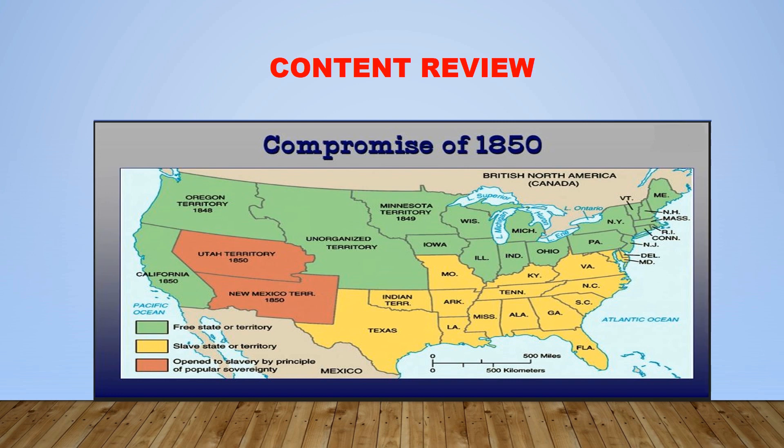Furthermore, California entered the Union as a free state and a territorial government was created in Utah. In addition, an act was passed settling a boundary dispute between Texas and New Mexico that also established a territorial government in New Mexico.